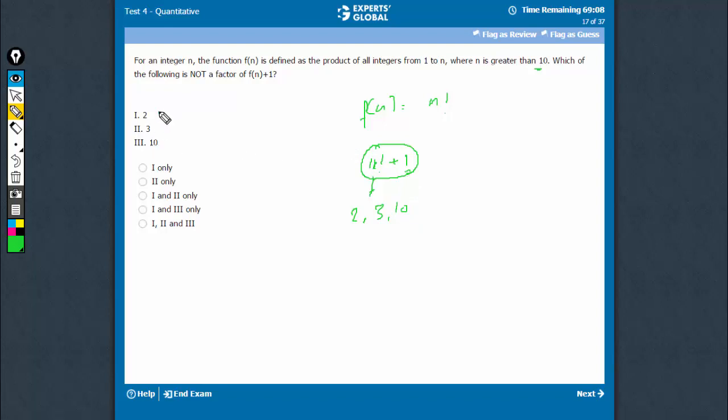So, 2, 3 as well as 10, none of them are a factor of f(n) plus 1. The question is asking, which is not a factor? So, all 3 are not a factor. It's important to read not here. If you did not read not, then you would get none as an answer.